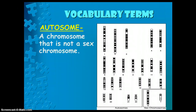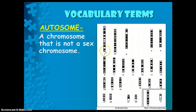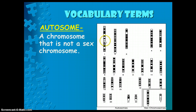An autosome is a chromosome that is not a sex chromosome. So when we talk about an autosomal chromosome or an autosomal trait, we're talking about chromosomes 1 through 22 that are not the sex chromosomes. This is also an example of what a haploid individual would look like, because there's only one chromosome for each. A diploid individual would have two chromosomes.